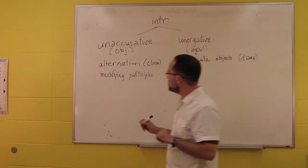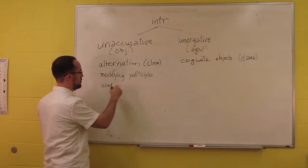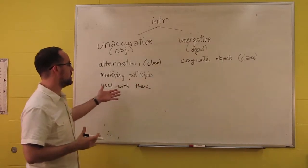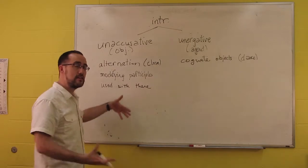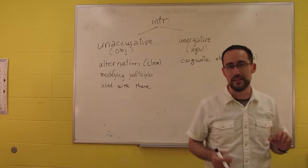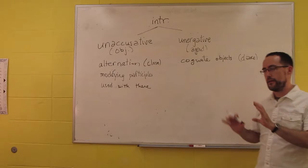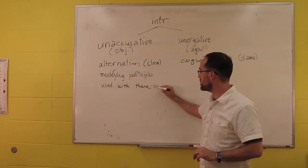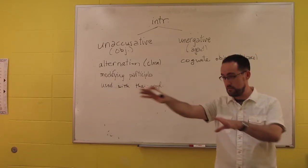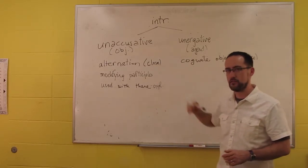Also, unaccusatives can be used with expletives, with there, with a there subject. A classic example of unaccusative is arrive. You can say there arrived a boat. That's perfectly grammatical. But again, with sing, you can't say there sang a choir. Now, it's tricky because this is the there expletive. If you use the inverted locative expression, there, at that point, sang a choir, that's okay. So you really have to be careful with that.